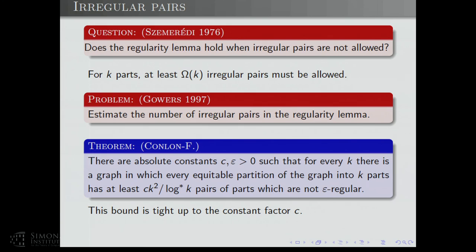It turns out you can mimic the upper bound proof of the regularity lemma to show it's essentially tight. There are absolute constants C and epsilon > 0 such that for every K, there's a graph in which every equitable partition into K parts has at least K²/log*(K) pairs of parts which are not epsilon-regular. This is tight up to the constant factor. These irregular pairs become a rather annoying issue in certain applications, but people eventually found ways to get around it.